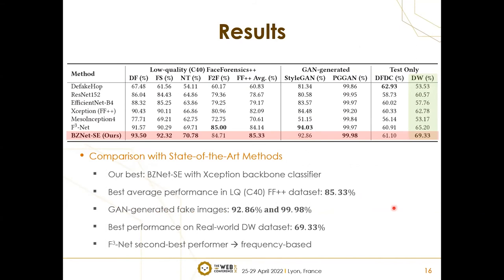These are our results. We compared six different state-of-the-art methods, and overall our method performed best. Even on the Deepfake in the Wild dataset, our model achieved almost 70%, while others were below 65% or 62%. The second best model was F3Net. They utilize frequency-based features — transforming the image into frequency space and using that information for classification — which is a very effective way to distinguish deepfake datasets.